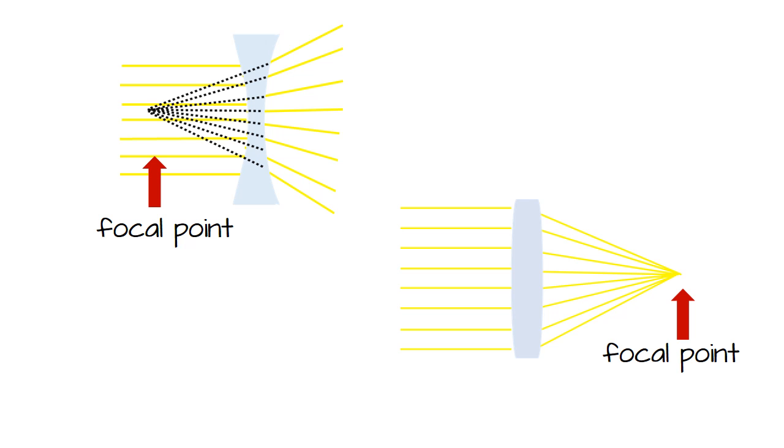We talked about focal length and focal points before, but to do a quick recap: we can have either real focal points or virtual focal points. A converging lens, a positive lens, has a real focal point. A diverging lens, a negative lens, has a virtual focal point. Virtual focal points are negative, real focal points are positive.